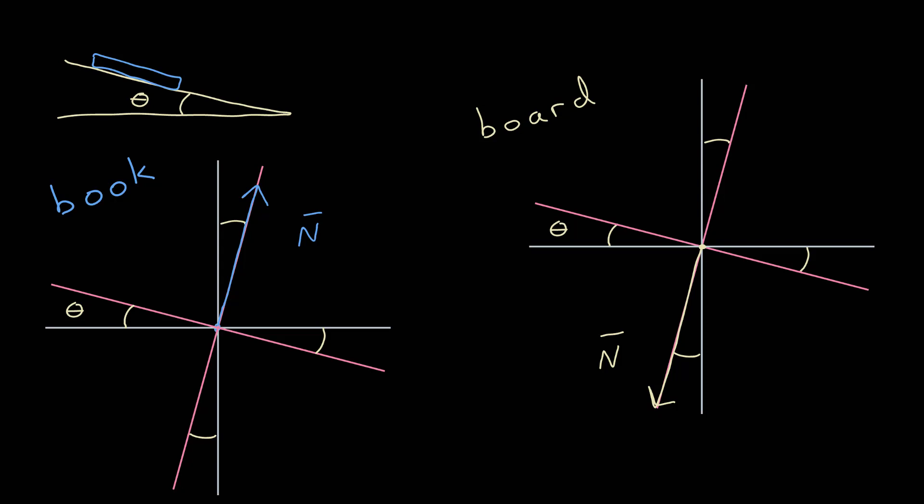but it's going to point from the agent, which is in this case the book, to the object, which in this case is the board. And it will then point in this direction.